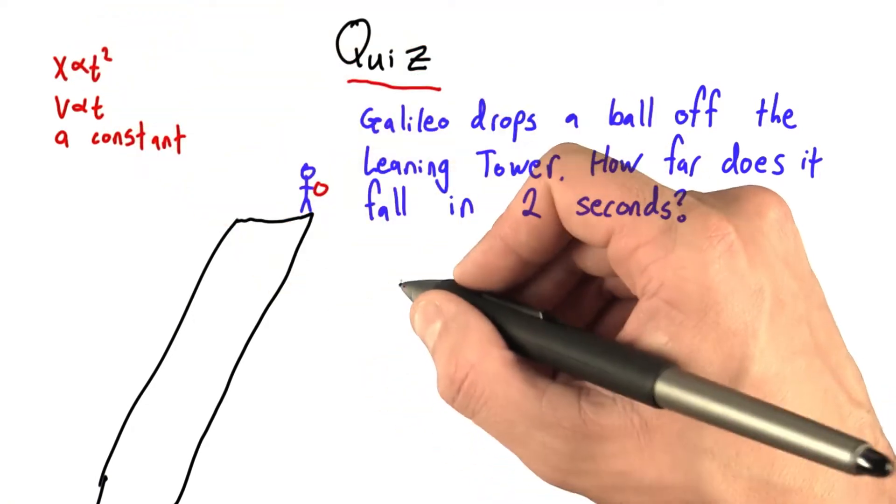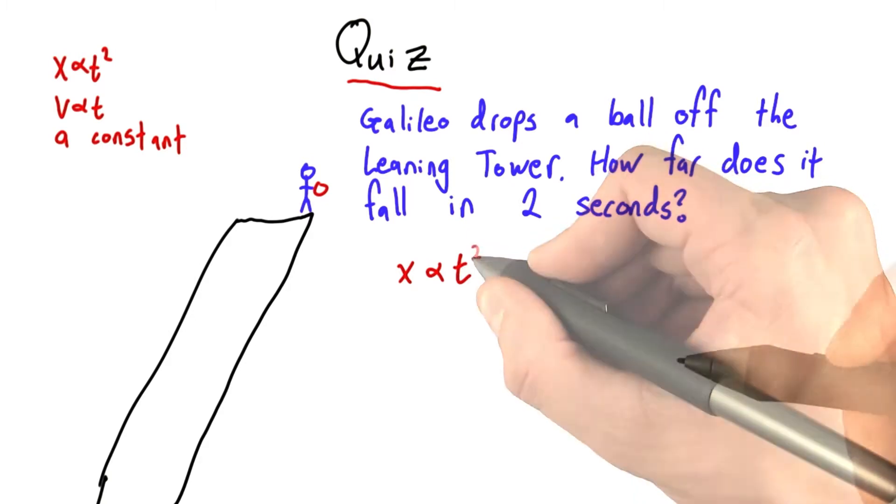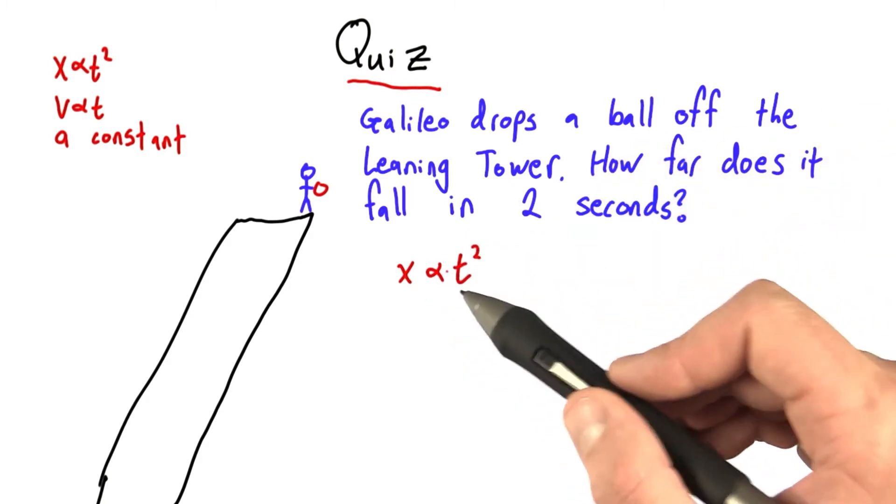Well, we want to know distance, so I'm thinking we're going to use our relationship with x, and it's somehow proportional to t squared. But unfortunately, this is not enough information.